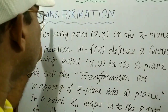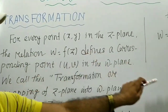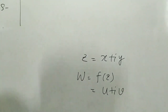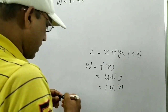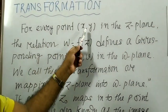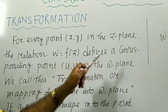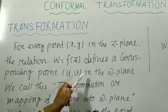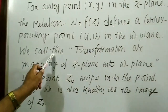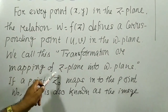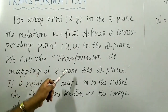First, we consider the definition of transformation. For every point (x, y) in the z-plane — where z equals x plus iy — the relation w equals f(z) defines a corresponding point (u, v) in the w-plane. We call this the transformation or mapping of the z-plane into the w-plane.